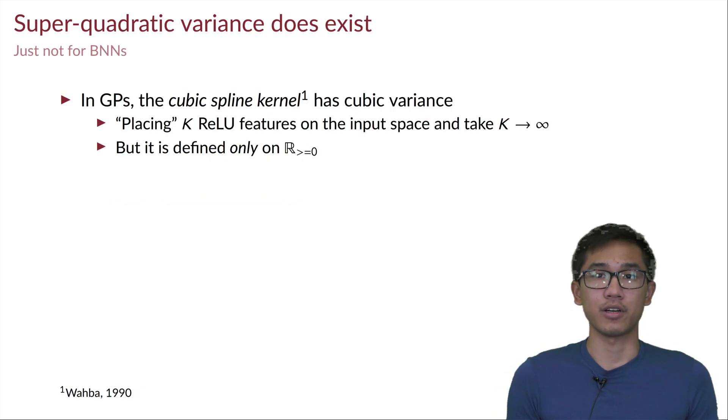And speaking about super-quadratic variance growth, in the adjacent field of Gaussian processes, there is a kernel that achieves the cubic variance growth, and this kernel is called the cubic spline kernel. And coincidentally, this kernel actually arises from ReLU features where the number of features tends to infinity.